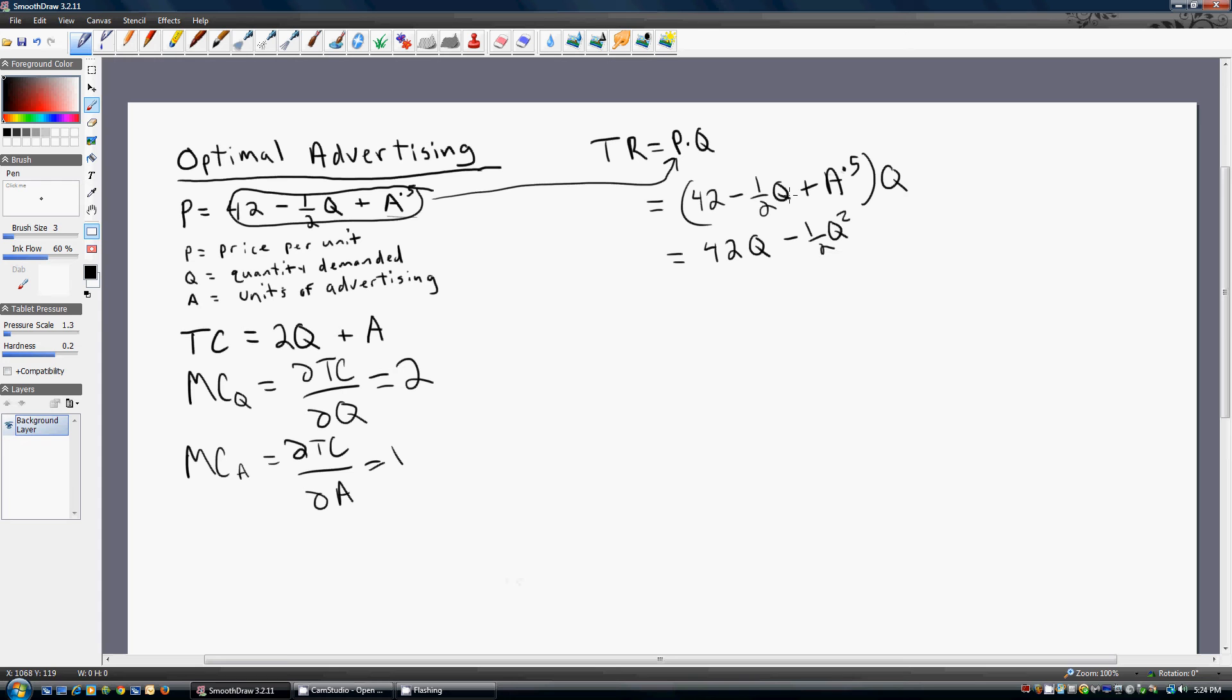So Q times Q is where the Q squared is coming from. After that, we're going to get marginal revenue.